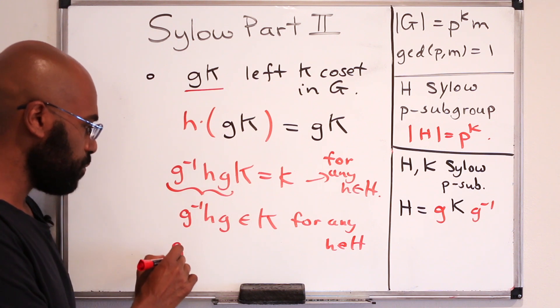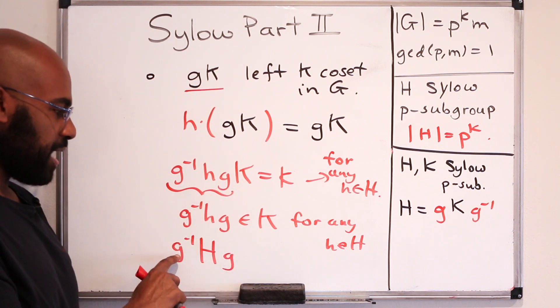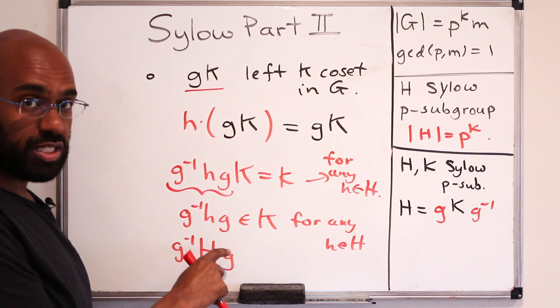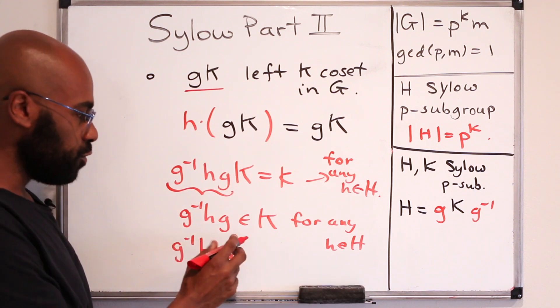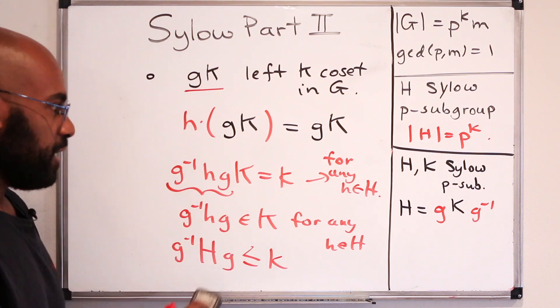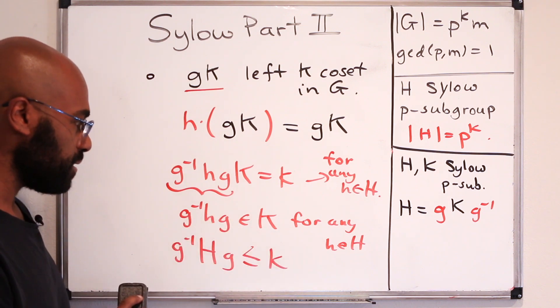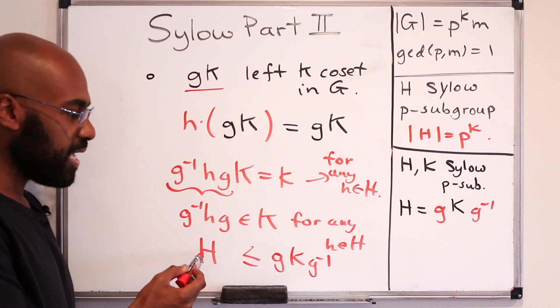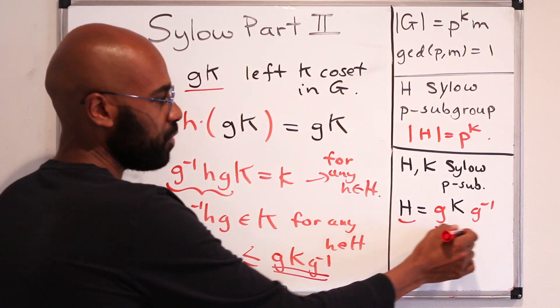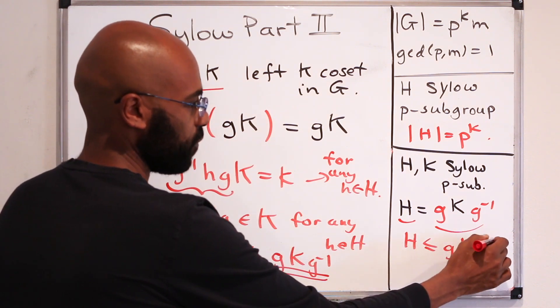So if you look at this particular subgroup here, G inverse capital HG, which is obtained by multiplying G inverse by elements of H times G running over all H, this thing is a subgroup and all its elements lie in K, so it's actually a subgroup of K itself. If we rearrange this by multiplying by G on the left and G inverse on the right, we can reword this as saying that H is a subgroup of this group right here.